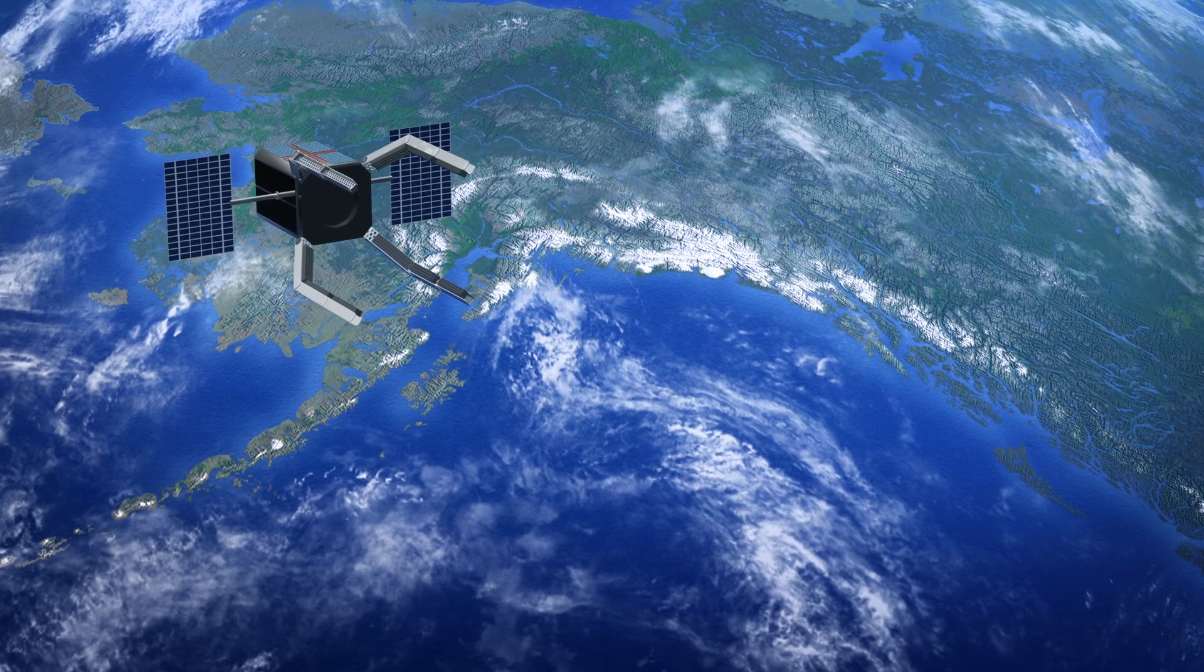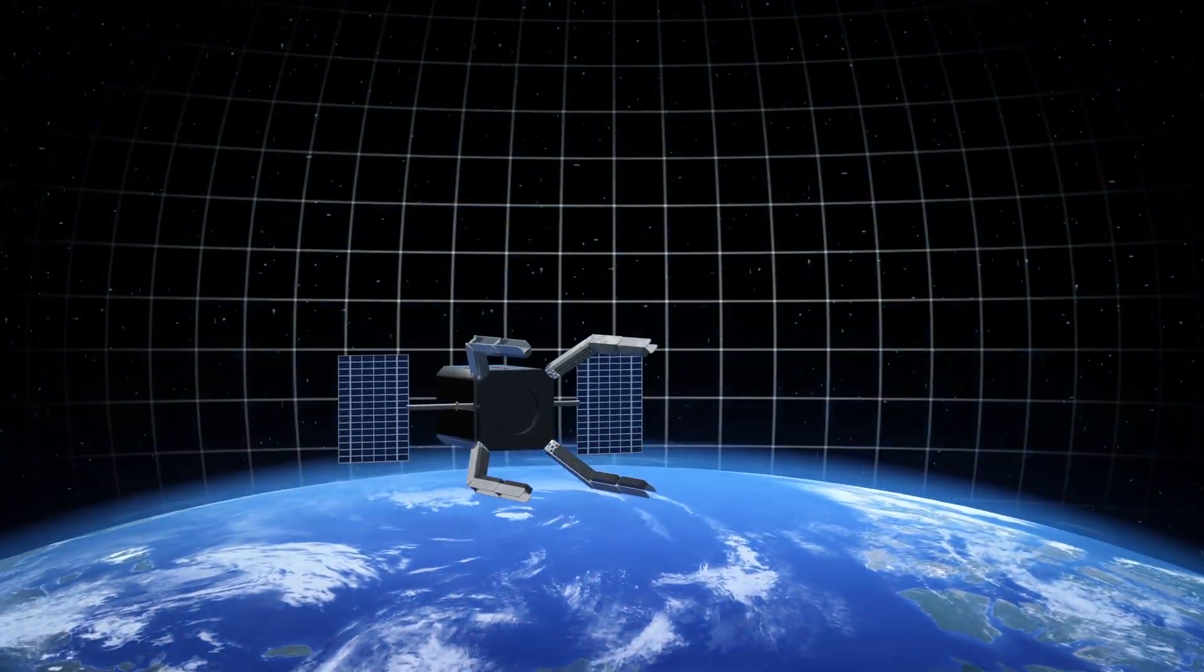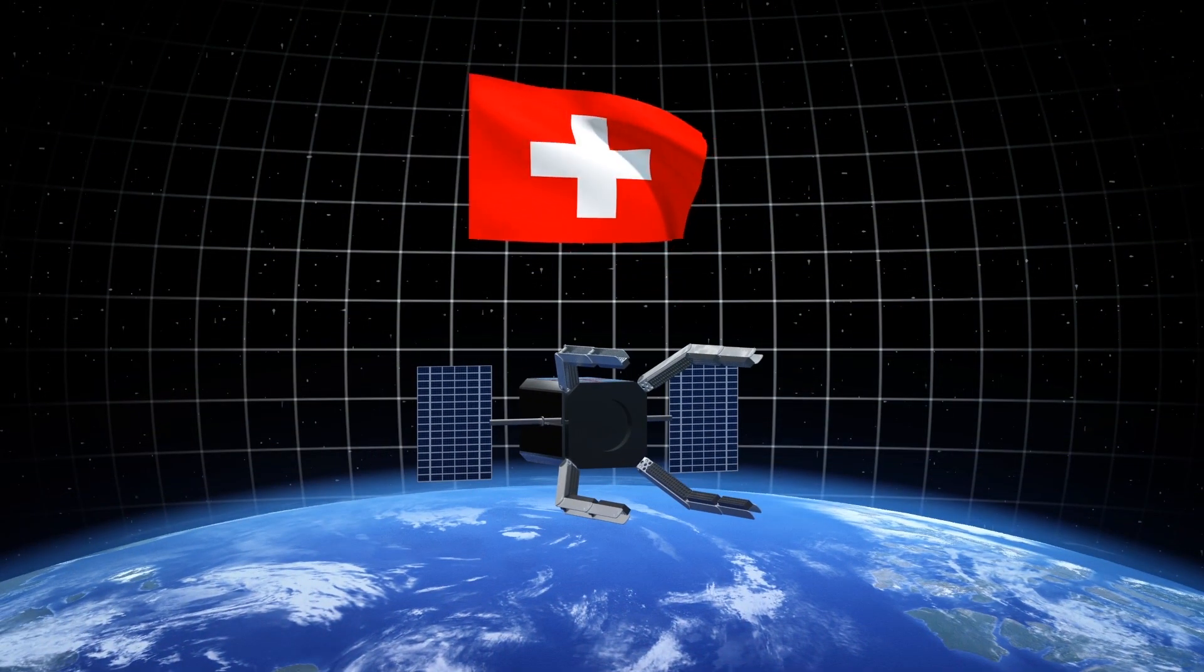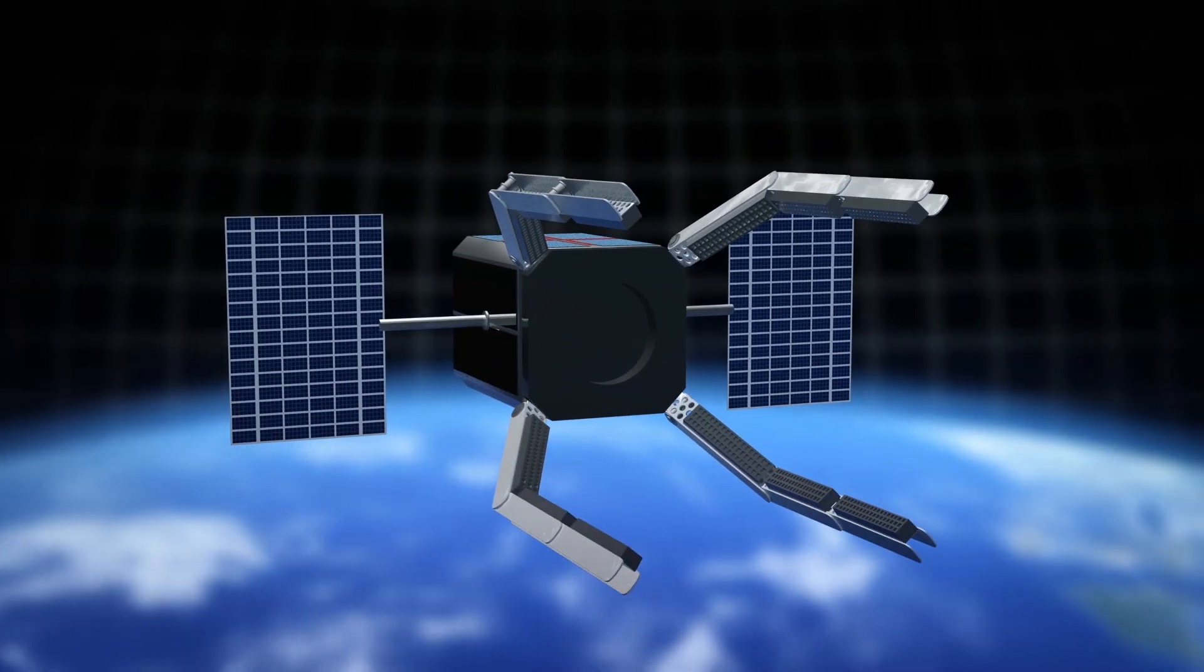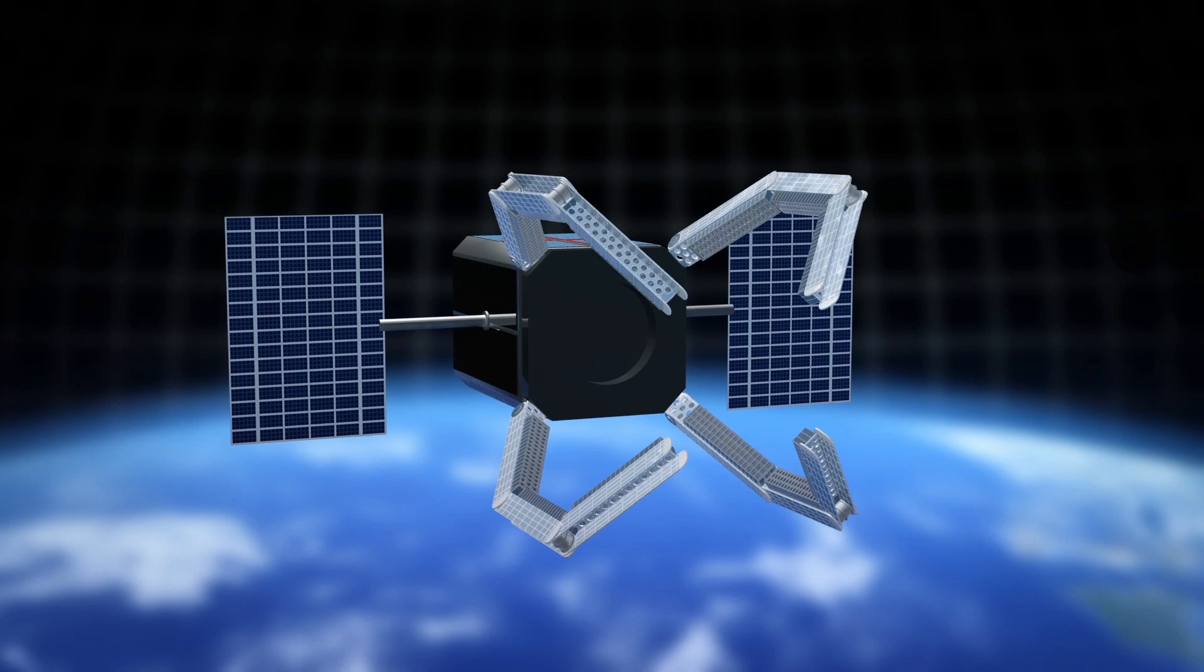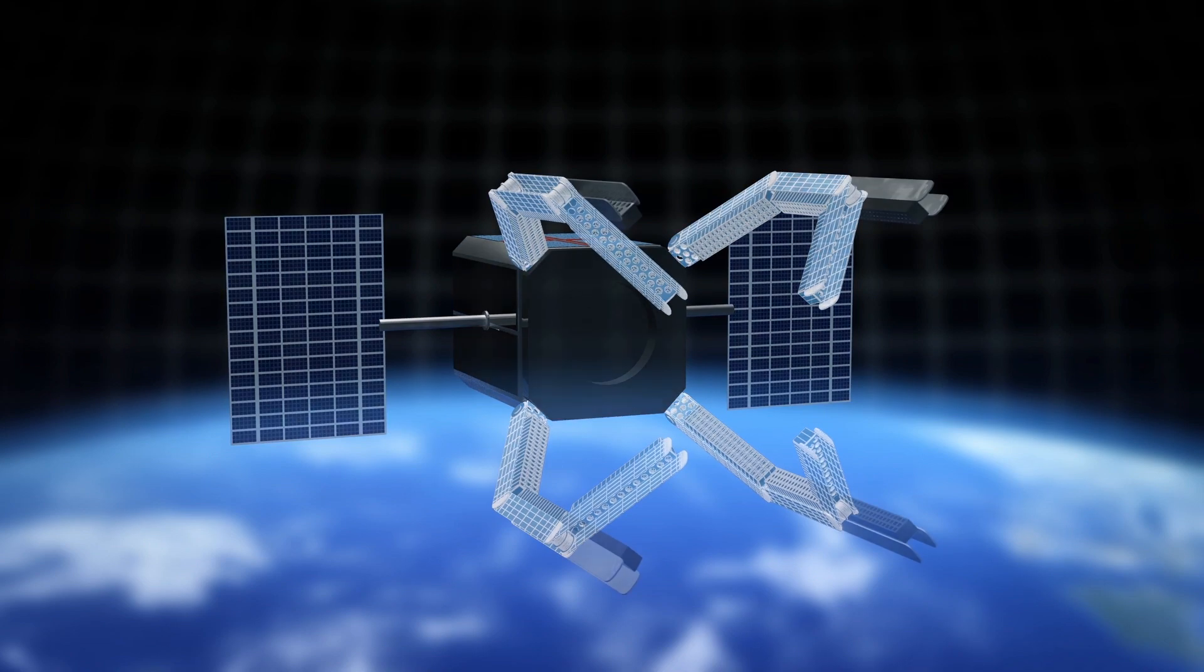The European Space Agency has commissioned the world's first mission to capture a piece of space debris from Earth's orbit in 2025. The ESA says the Swiss startup ClearSpace was awarded a contract for ClearSpace1, a spacecraft that will sport four robotic arms for grabbing debris.